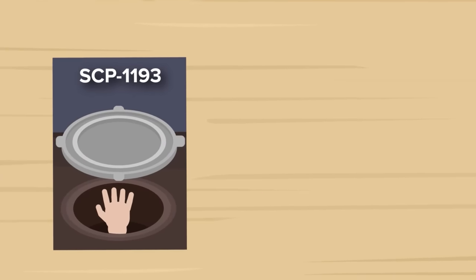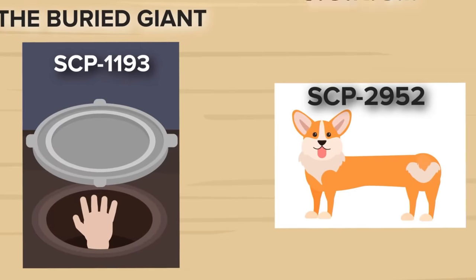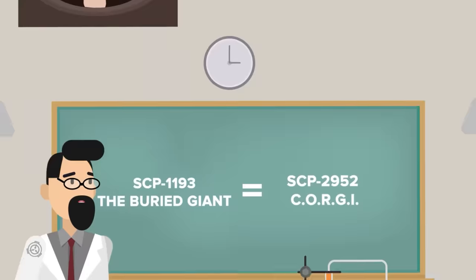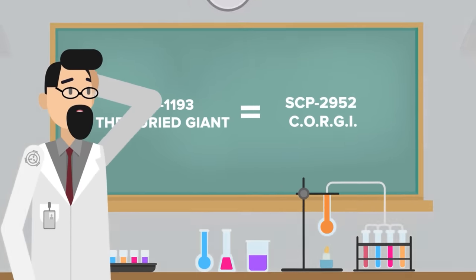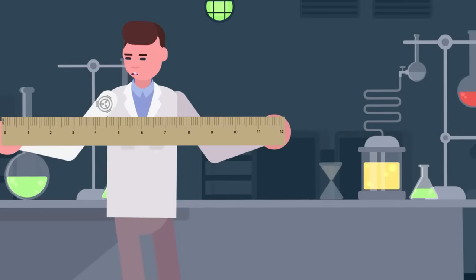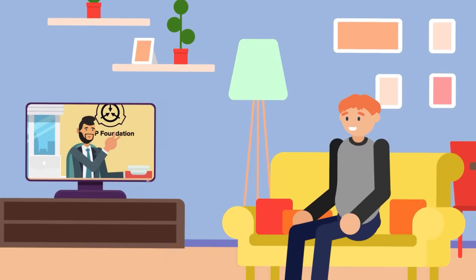Incidentally, that happens to be the case with SCP-1193, the Buried Giant, and SCP-2952, Corgi. They're a pair of mysterious creatures with very thought-provoking similarities between them. But while both are exceedingly long entities, neither are particularly long stories. So today, we're giving you a rare SCP-explained anomaly double feature.